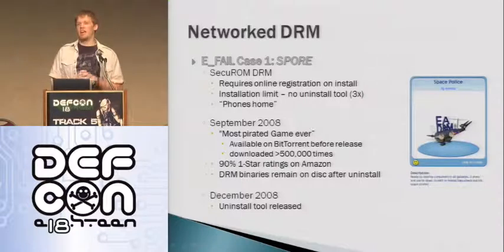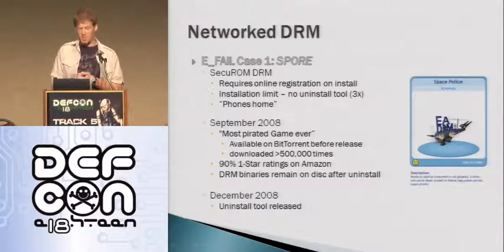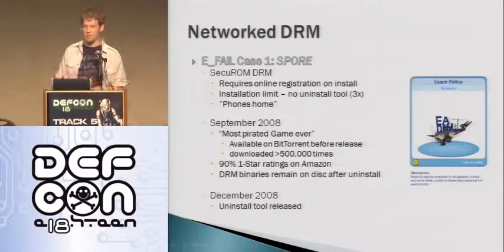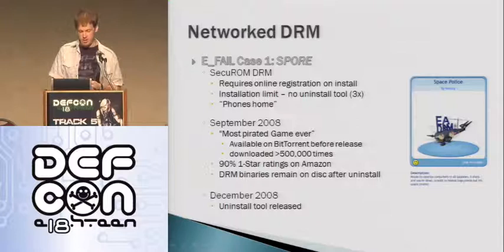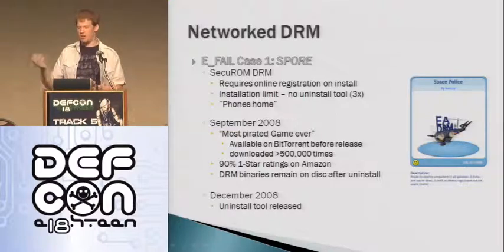Network DRM has had a couple of spectacular failures. The first one, which was extensively in the media, is Spore. It uses SecuROM DRM, and the main idea is that it requires an online registration and install with an install limit, which should already ring all your bells — if your hard drive crashes a couple of times, you can't install it past three. It also phones home, contacting the server from time to time to verify everything. This was in 2008, and in September it became the most pirated game ever before it even came out — about half a million torrent downloads before release. It was a major failure in terms of DRM — the DRM was just stripped off the disk immediately.